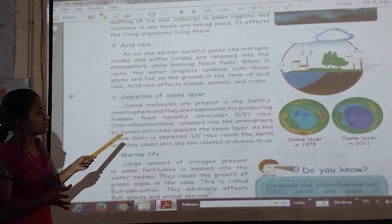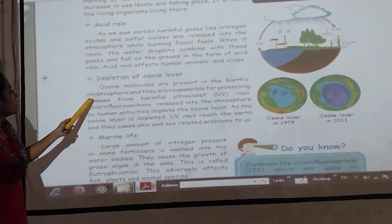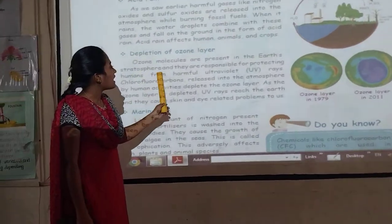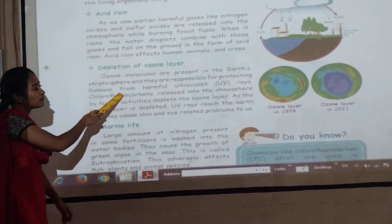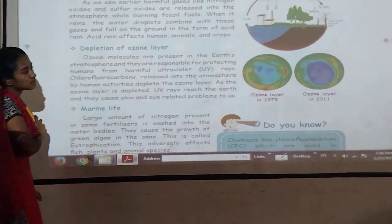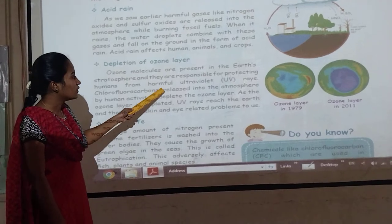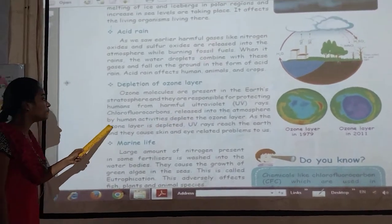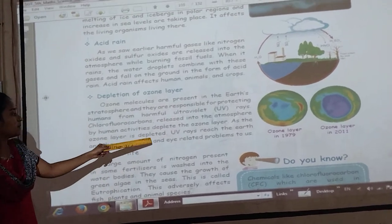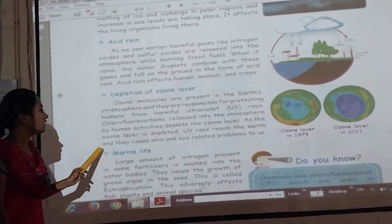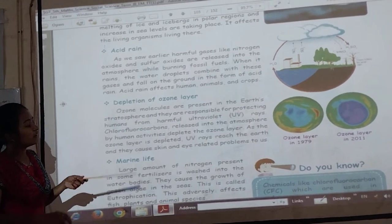Depletion of the ozone layer — ozone molecules are present in the stratosphere and they are responsible for protecting humans from harmful ultraviolet rays, i.e. UV rays. Chlorofluorocarbons released into the atmosphere by human activities deplete the ozone layer. As the ozone layer is depleted, UV rays reach the Earth and cause skin and eye related problems.